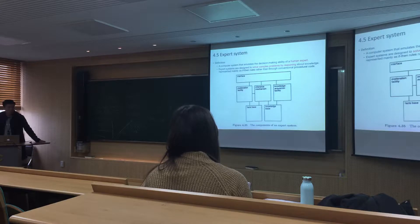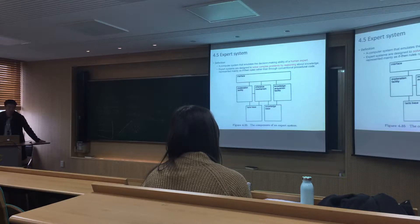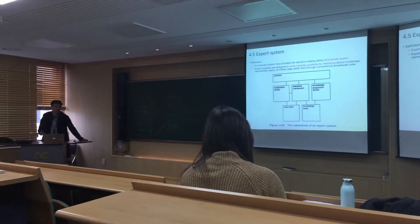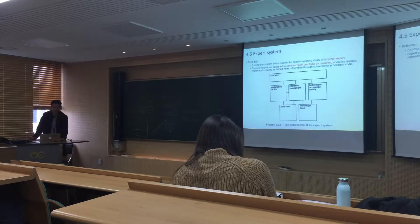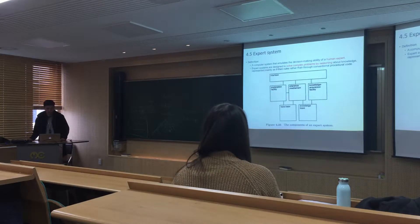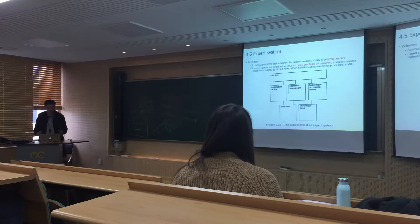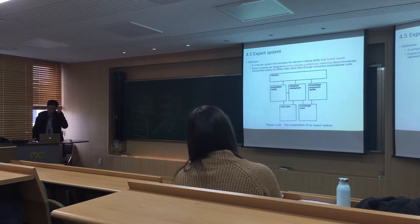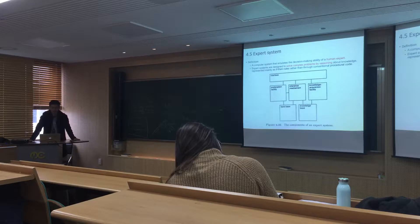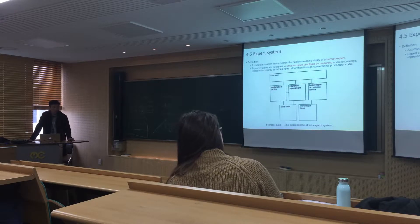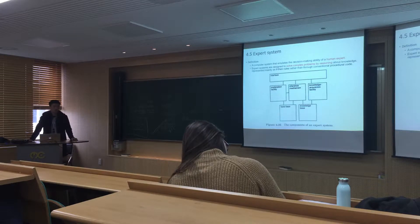The expert system is a computer system that evaluates the decision-making ability of a human expert. It means the expert systems conduct some results instead of humans. Expert systems are designed to solve complex problems by reasoning, using knowledge presented as if-then rules rather than through conventional procedural code. This figure shows the general structure of expert systems.